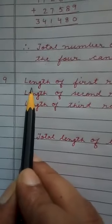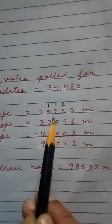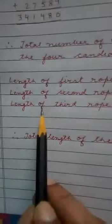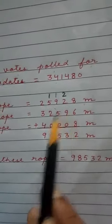Now here we will add. So length of first rope 25,928 meter. Length of second rope 32,596 meter. Length of third rope 40,008. Now we will add it.